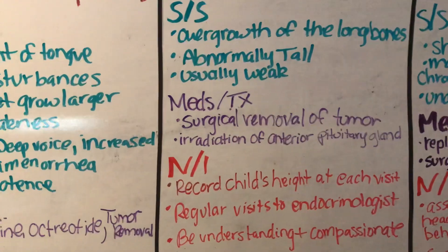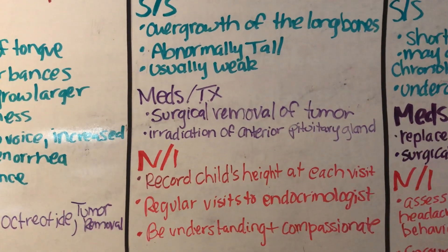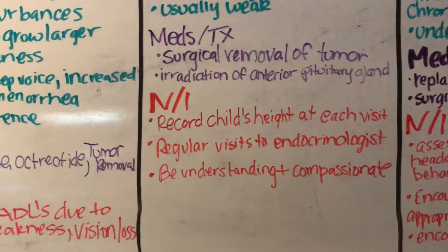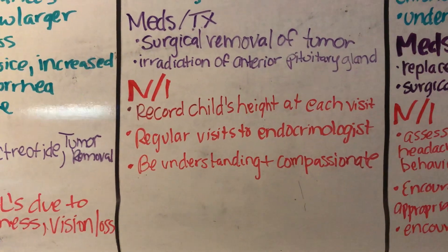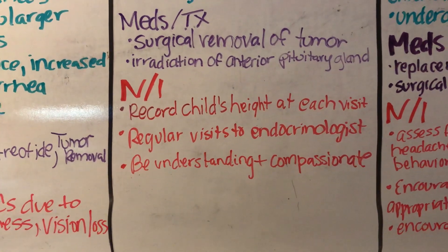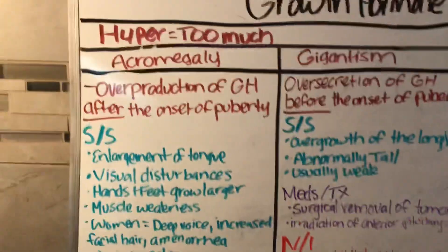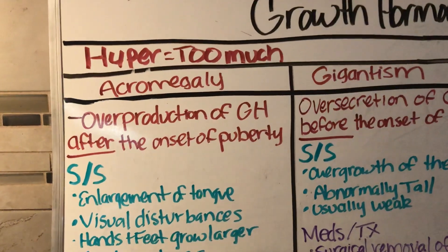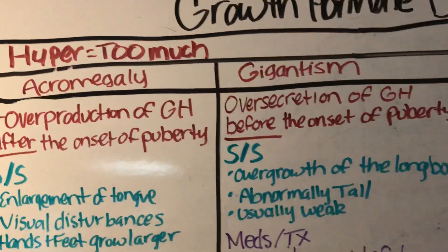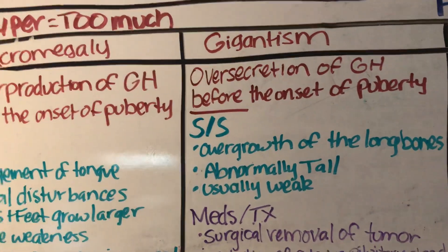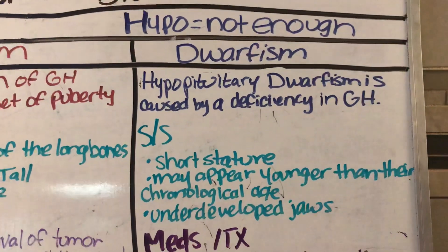Medication and treatment for gigantism includes surgical removal of the tumor or eradication of the anterior pituitary gland. Nursing interventions include recording the child's height at each visit, encouraging regular visits to the endocrinologist, and being understanding and compassionate. To compare: acromegaly happens after puberty, and gigantism happens before puberty.